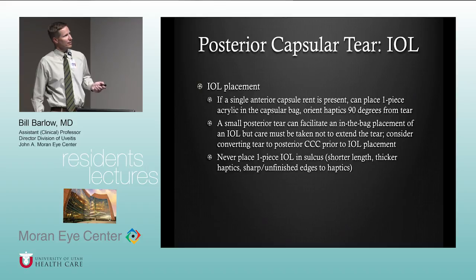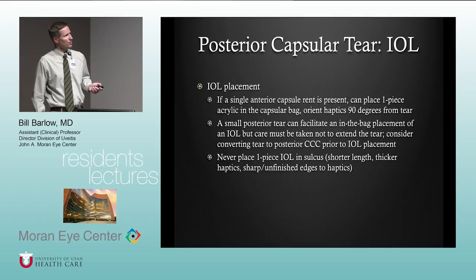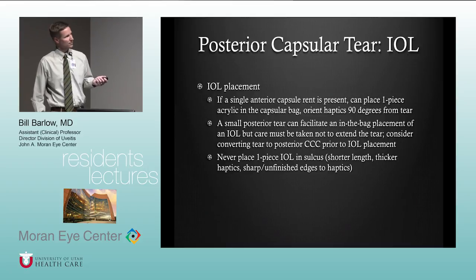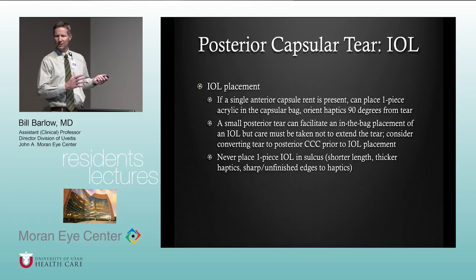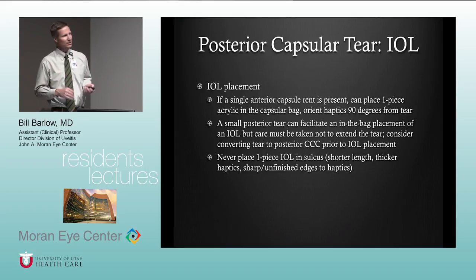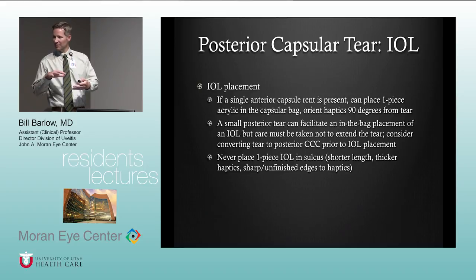A small posterior capsular tear can facilitate in-the-bag placement of the IOL — just be careful not to extend the tear. You can also convert the tear to a posterior capsulorhexis prior to placing the IOL. We never want to place a one-piece acrylic IOL in the sulcus — the shorter length, thicker haptics, and sharp unfinished edges will create UGH syndrome and you'll have to remove that lens. If that situation arises, either reverse optic capture it — haptics behind the capsulorhexis, optic anterior — or remove and replace it with a lens that can safely go in the sulcus.